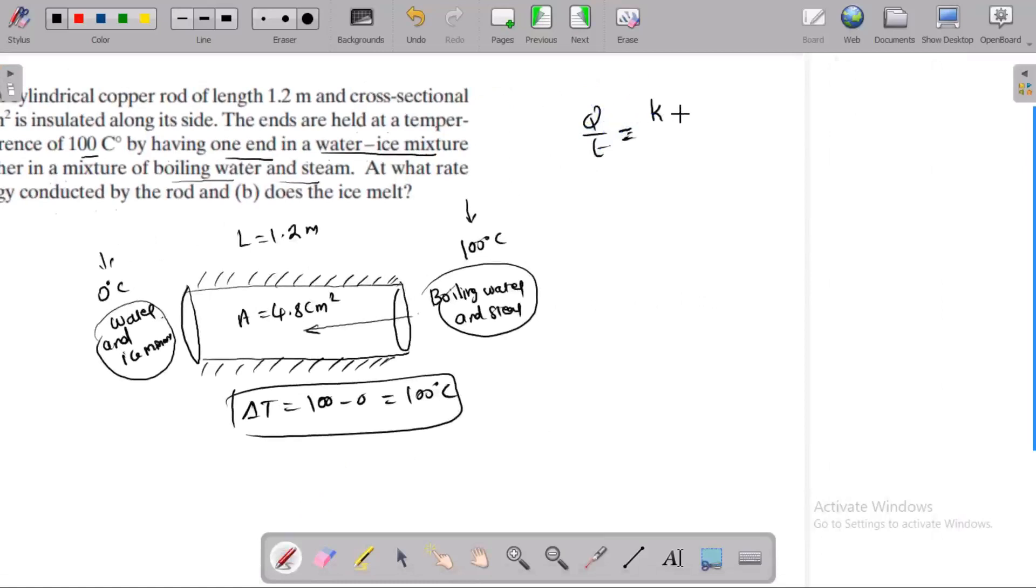The thermal conductivity of the rod, area of the rod, del T, del T means 100 degrees Celsius, divided by length of the rod is 1.2. This is copper, so thermal conductivity for copper.